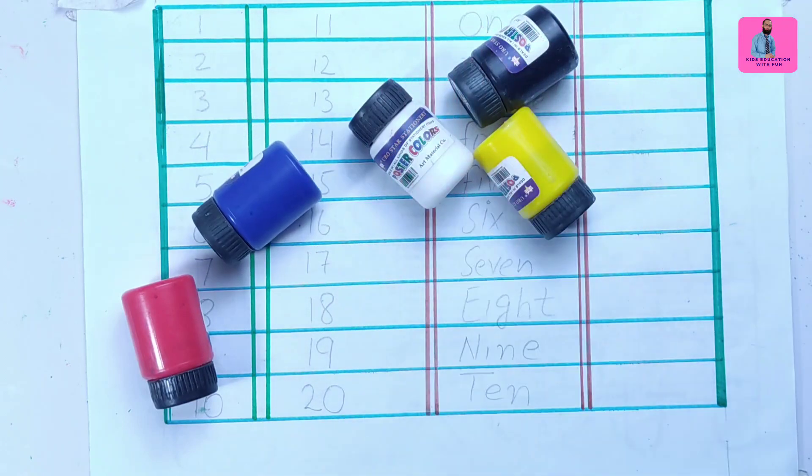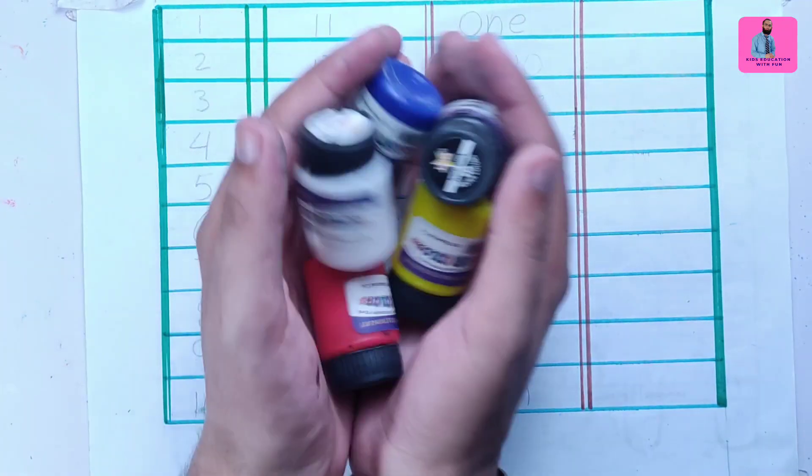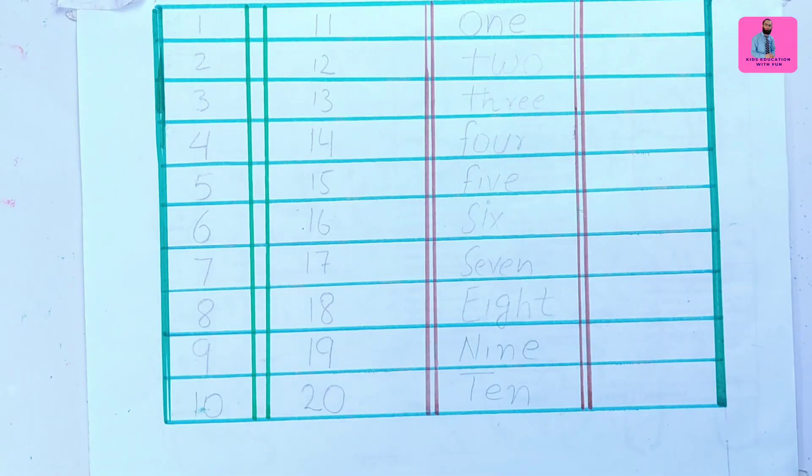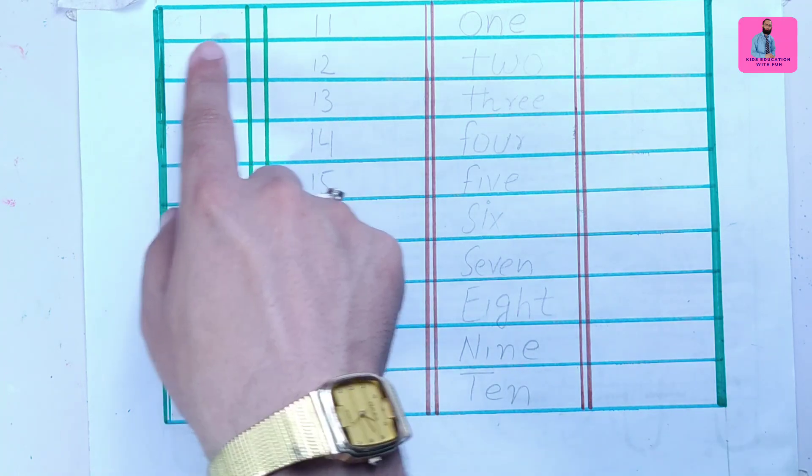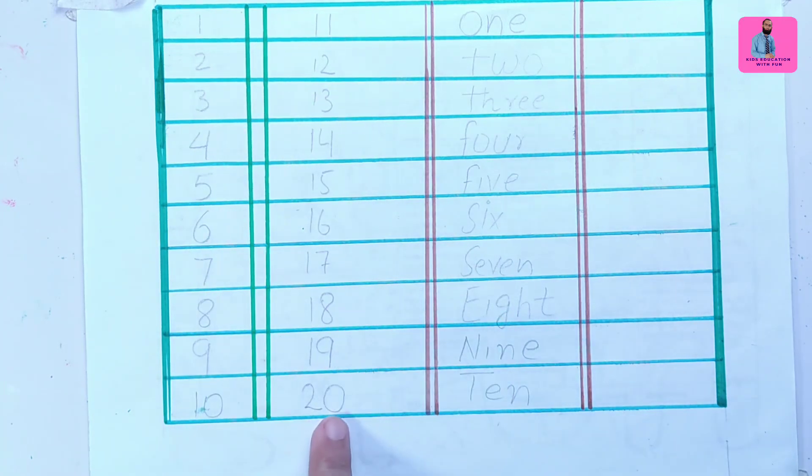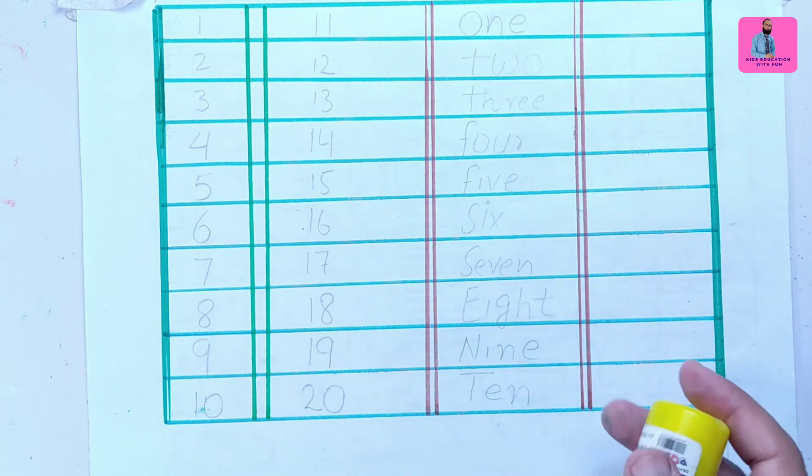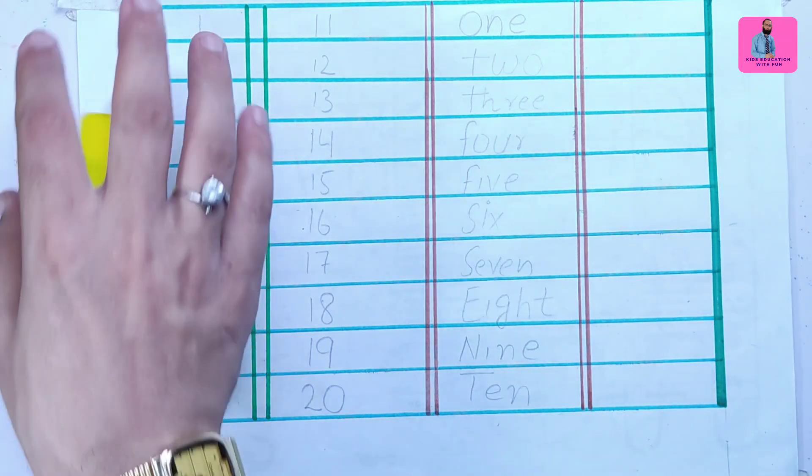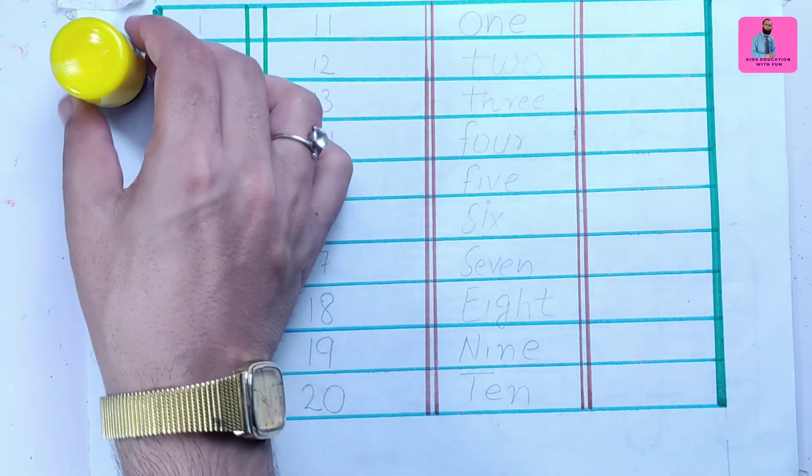Hello kids, welcome to Kids Education with Fun. In this video we are practicing numbers from 1 to 20, and we will also write down the name of these numbers. Here we have some colors: yellow color,